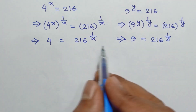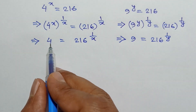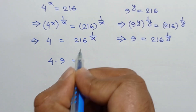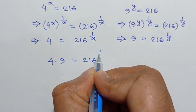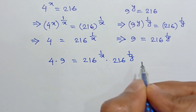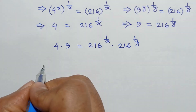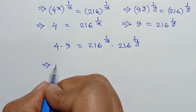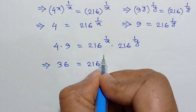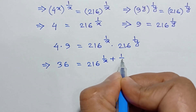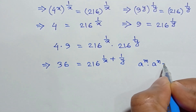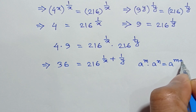Now if we multiply these two equations, we will get 4 times 9 is equal to 216 to the power 1/x times 216 to the power 1/y, which equals 216 to the power 1/x plus 1/y, according to the formula: a to the power m times a to the power n is equal to a to the power m plus n.